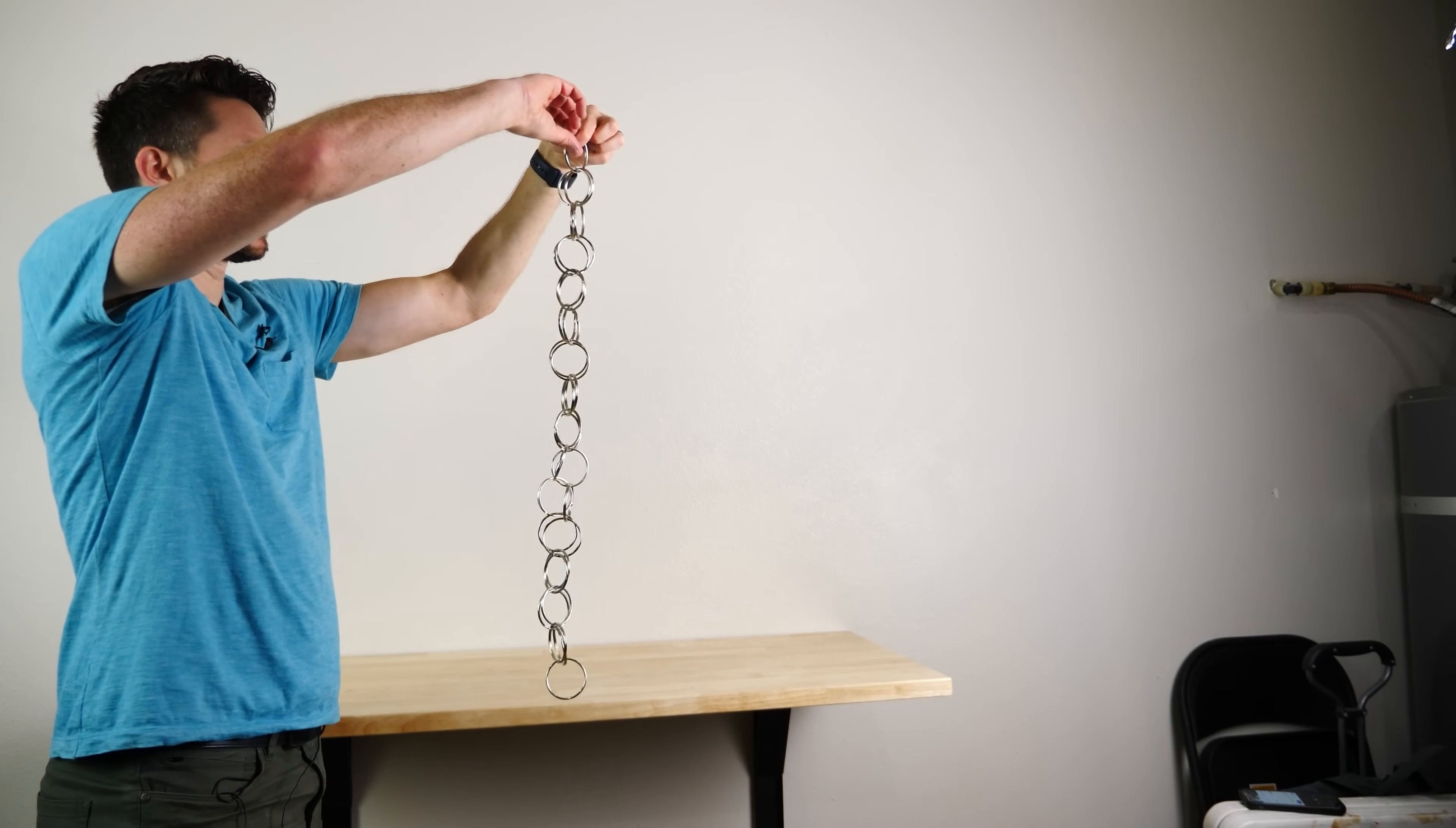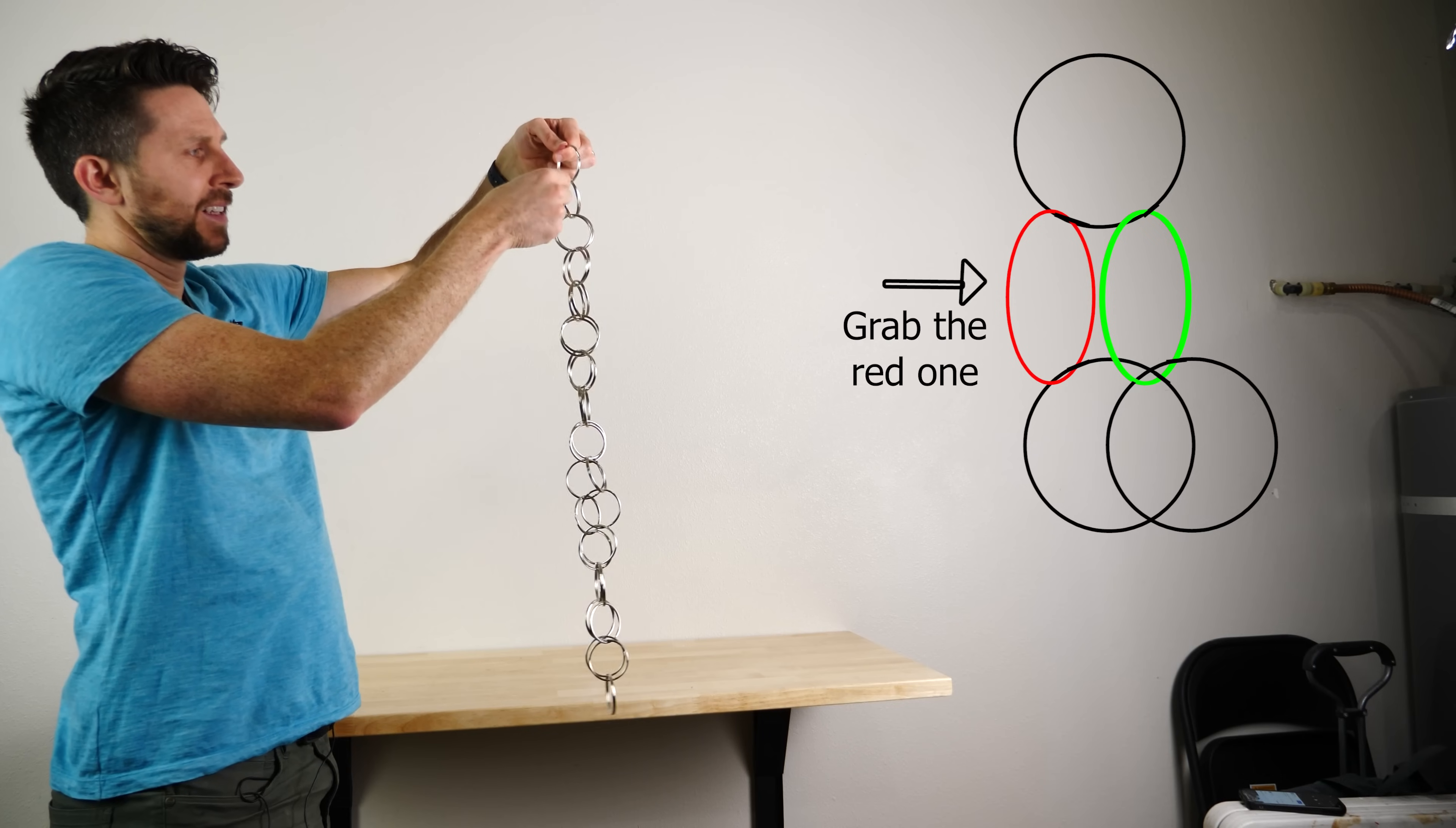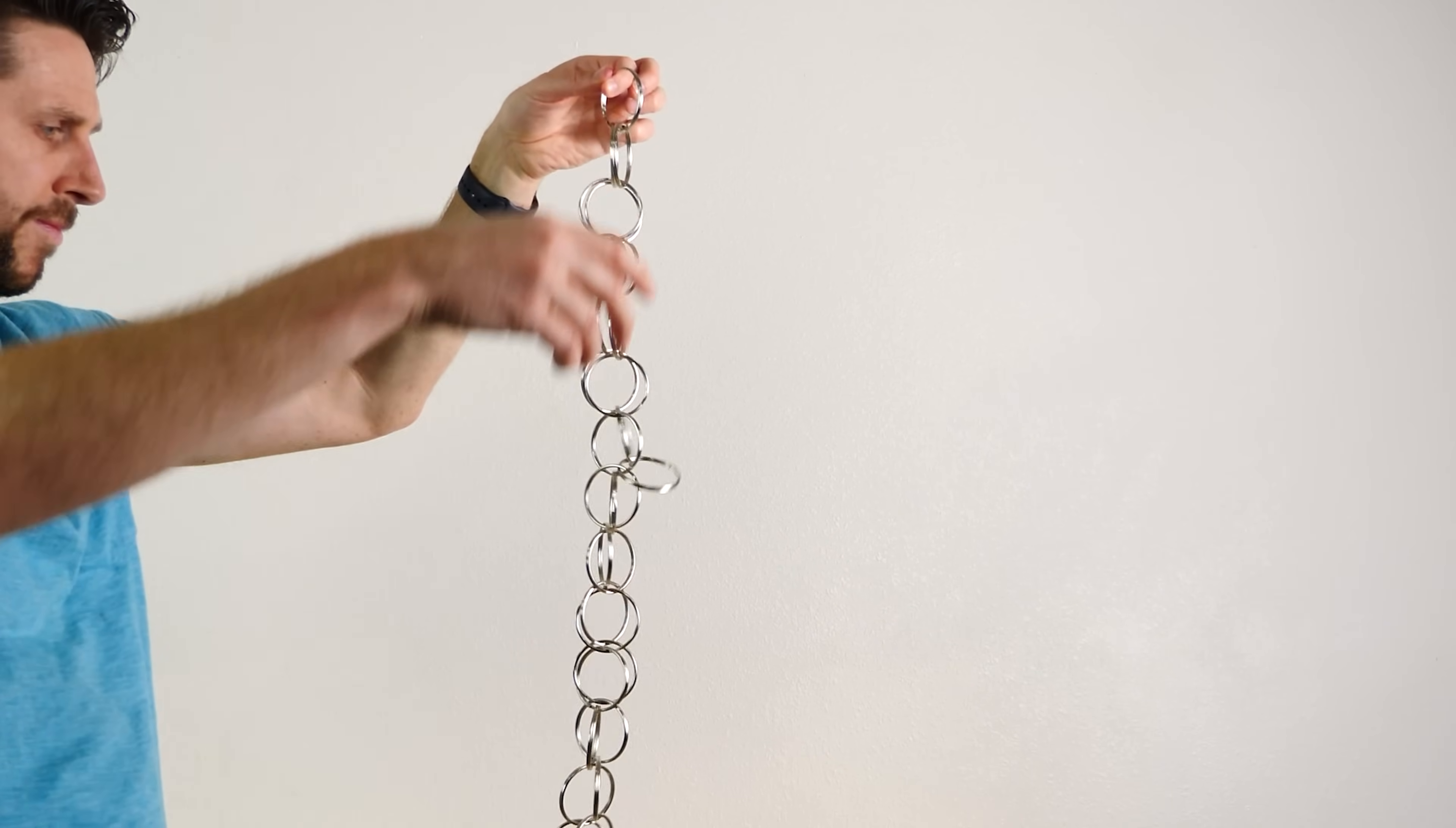Then when you're done, you should have this final set. So to start it, remember, you always grab the ring that's only through one of the two rings below it. So that's this one right here. And then drop it and you'll see it fall to the bottom.